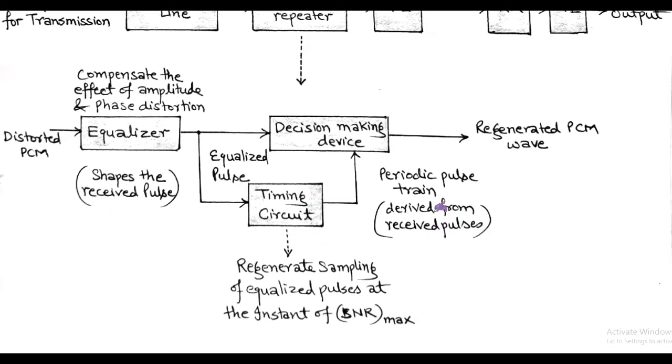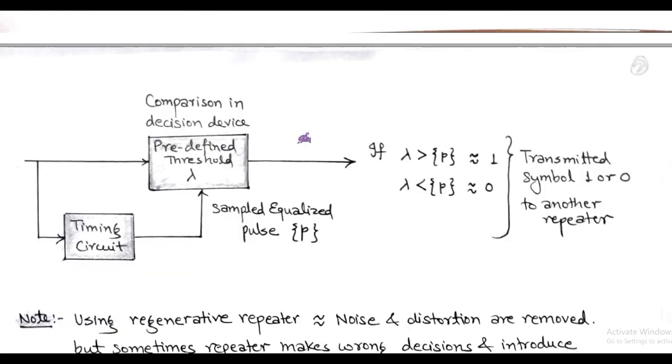In the decision making device, comparison is performed with respect to the predefined threshold value λ. If threshold λ is greater than equalized pulse P, symbol 1 is the output. Also, if λ is less than equalized pulse, symbol 0 is the output. After taking correct decision, the coded pulse is transmitted to another repeater.